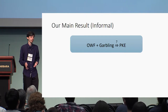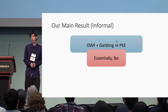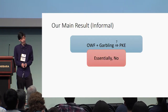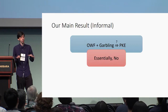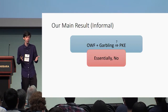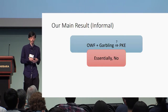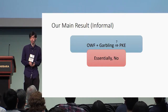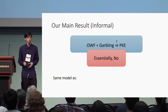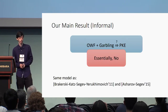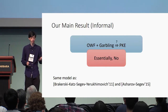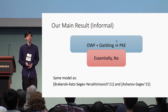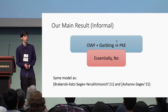Our main result is that essentially, no, you can't do that. We allow such constructions in a model that captures the known garbling-based positive constructions. This is the same model used by previous works of Berkursky, Katz, Segev, and Yurikimovich, and Ashraf and Segev under a different context.